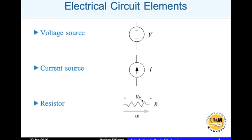There is a potential drop across the resistor VR; R is called the resistance of the resistor, and the current through the resistor is IR. Ohm's law gives a relationship between these three quantities: the voltage drop across the resistor VR equals the current through the resistor IR times the resistance R. This is valid for a simple linear model of the resistor; more complicated nonlinear models will not be dealt with in this course.